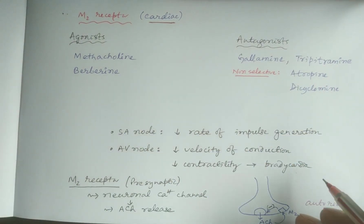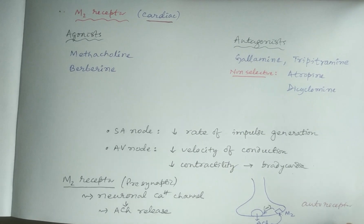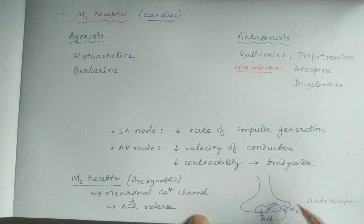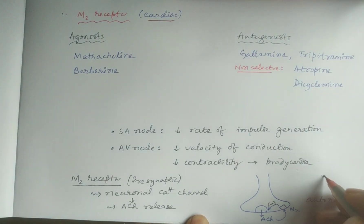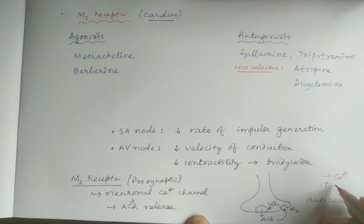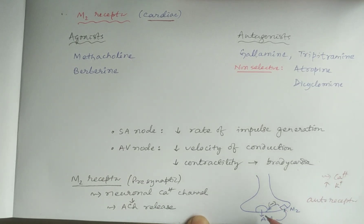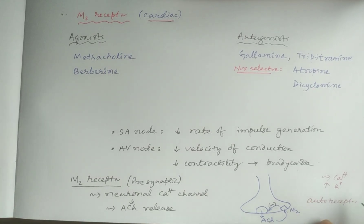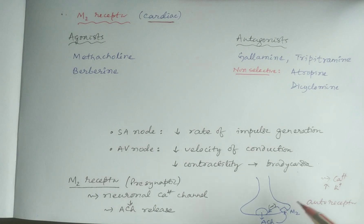M2 receptors in the heart produce bradycardia. In addition, they are present in the presynaptic neurons at nerve endings and inhibit their own release by causing either inhibition of calcium channels or opening of potassium channels, leading to inhibition of depolarization or hyperpolarization, so there is no exocytosis of the neurotransmitter acetylcholine. Thus, M2 is an auto-receptor that inhibits neuronal calcium channels and inhibits acetylcholine release.